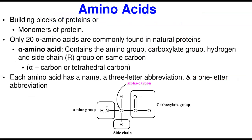Amino acids are the building blocks of protein — or we can say they are the monomers of protein, because it is from them that you build and get your protein. If you connect individual amino acids to one another, connecting and keep connecting, you build up your protein.